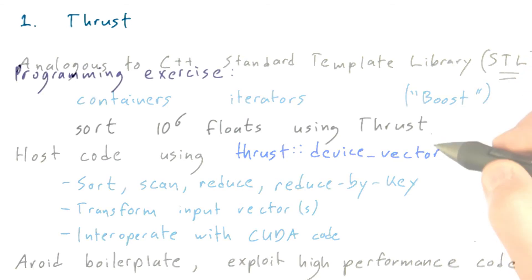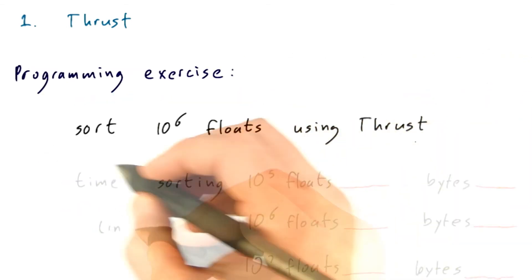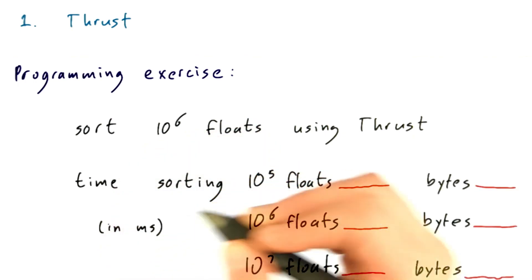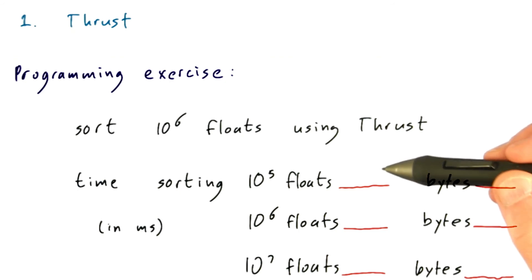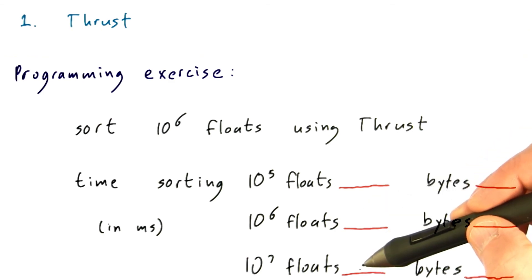Thrust can be very handy. We're going to give you thrust code that sorts 10 to the 6th floats, and we're going to ask you to time it. Then we're going to ask you to also time sorting 10 to the 5th and 10 to the 7th floats. Then enter here how long it took to sort 10 to the 5th floats, 10 to the 6th floats, 10 to the 7th floats, and 10 to the 5th, 10 to the 6th, and 10 to the 7th bytes. Enter your answer in milliseconds, and we'll check to within a significant digit or so.